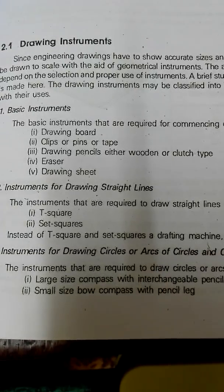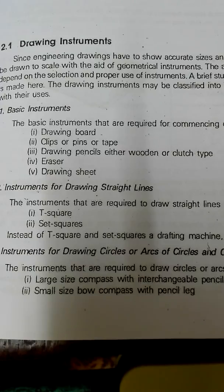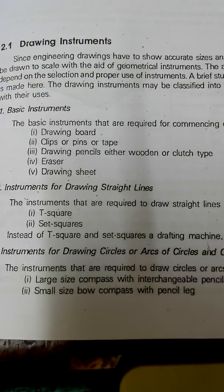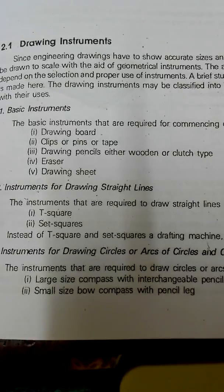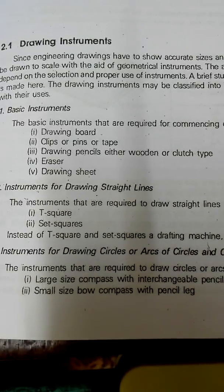In engineering drawing, the basic concepts we need to understand include the instruments used and the views — front view, top view, side view, bottom view, and other views needed to draw engineering drawings. Engineering drawing is basically a language used for communication between design engineers and production engineers, to understand the drawings so the production department can follow whatever drawing has been provided.